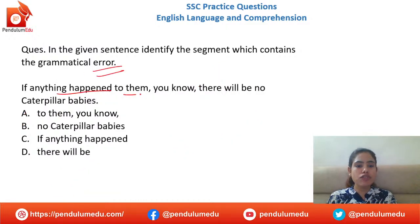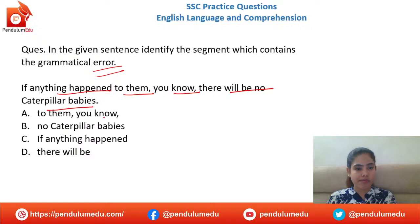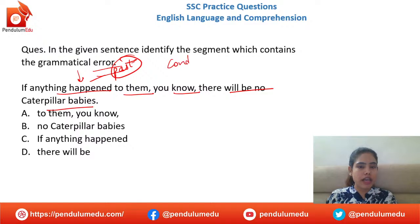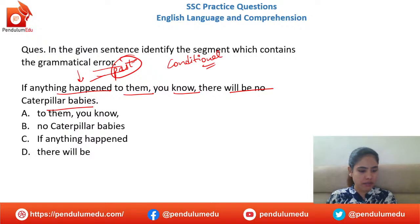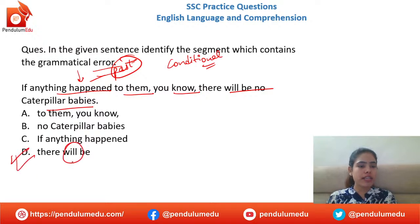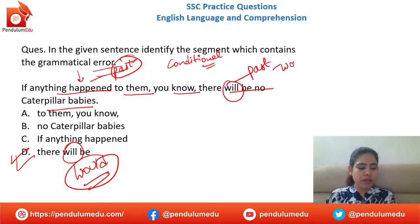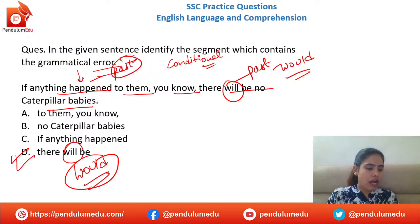Next error: 'If anything happened to them, you know there will be no caterpillar babies.' This is a second conditional structure. When the 'if' clause uses past tense ('happened'), the main clause needs a past modal. 'Will' is a present modal — it should be 'would.' Option D is correct — it will be 'would be no caterpillar babies.' Ashish, Sanjeev, and Suraj — 'would' is absolutely right.